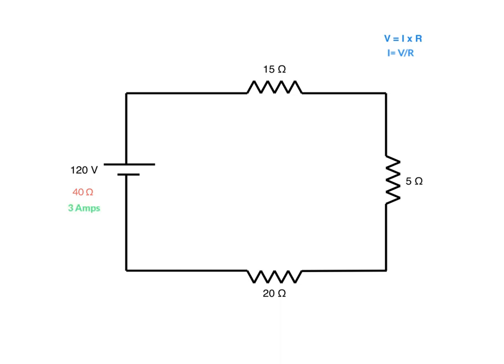We've figured out what the current in the circuit is using Ohm's law by transposing the formula. Now we have 120 volts in this circuit, a total resistance of 40 ohms, and a total current of 3 amps.